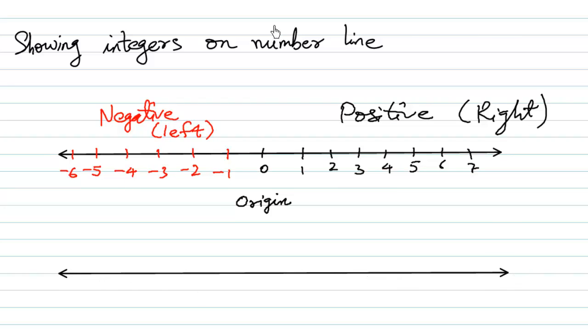For instance, you can in fact write 0 on the extreme right side and then write all the negative numbers if you do not require positive numbers on your number line.